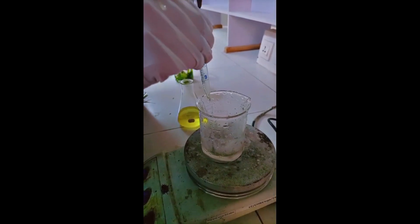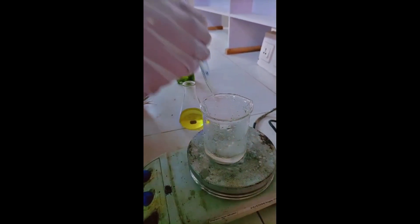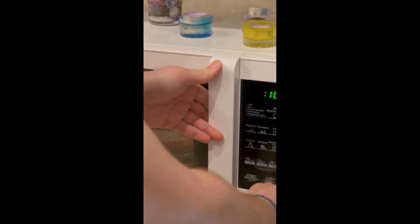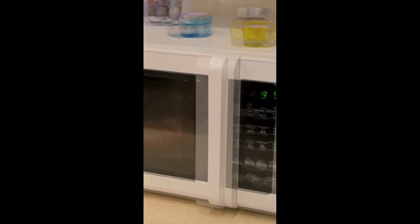This precipitate is the zinc oxide nanoparticles. Once the reaction is complete, filter the solution using filter paper and a funnel. Collect the solid zinc oxide nanoparticles on the filter paper. Transfer the filtered precipitate to a drying oven and dry at 60 to 80 degrees Celsius until completely dry. After drying, you will obtain a fine powder of zinc oxide nanoparticles.